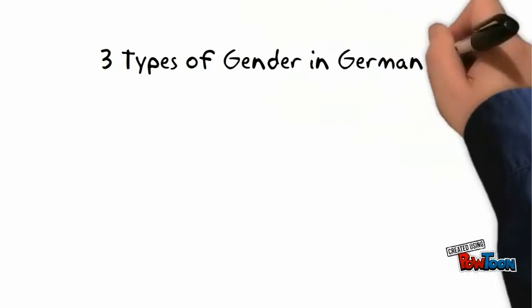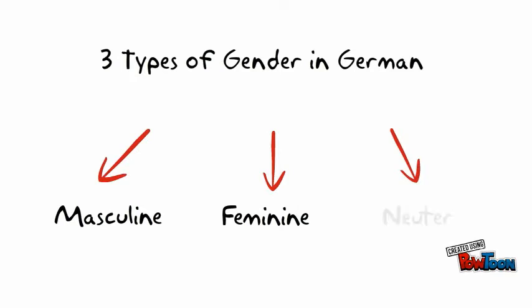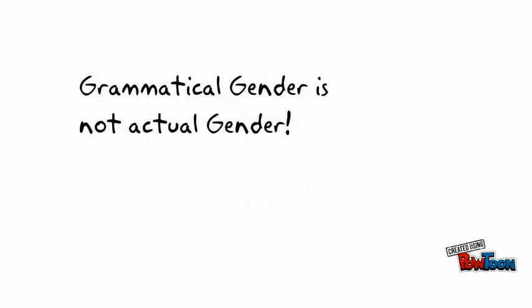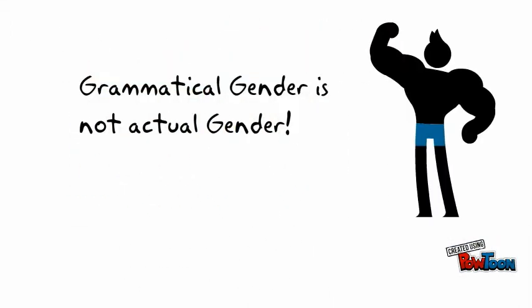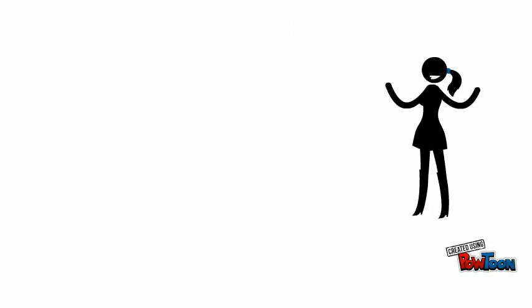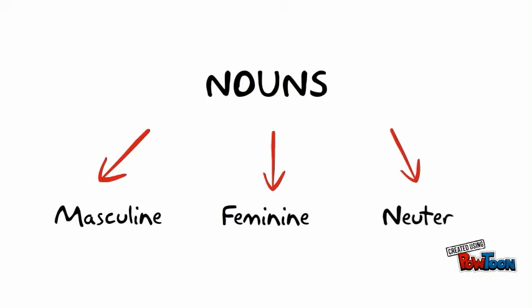There are three different types of gender in German. These are masculine, feminine, and neuter. It is important to note that grammatical gender is not actual gender. We're not talking about boys and girls here. What we are talking about is the simple fact that nouns have a grammatical gender in German — they can be either masculine, feminine, or neuter.